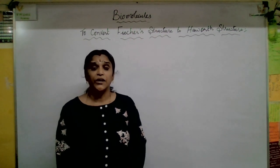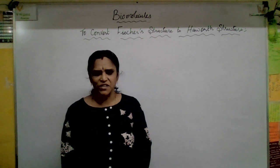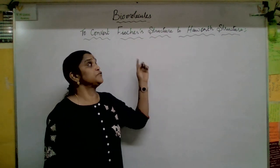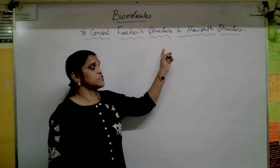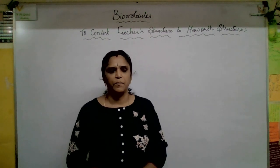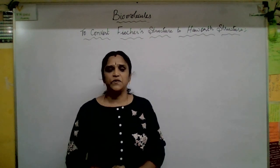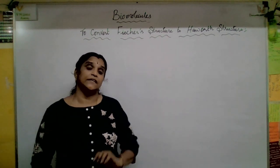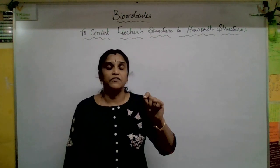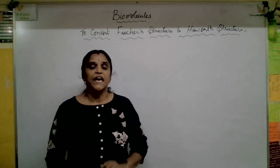Hello students, today we are going to see some important questions - among them, how to convert Fischer's structural formula to Haworth's structural formula of glucose. In our last video, we have gone through how, through hemiacetal formation, glucose is converted into alpha-D-glucose and beta-D-glucose.